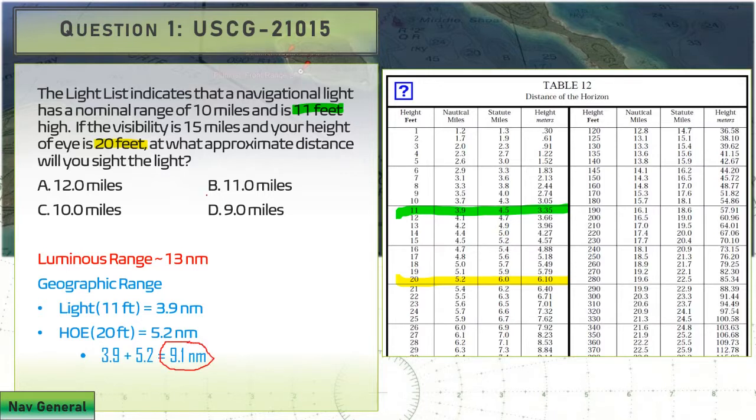We now have both ranges calculated. We figure out which one is smaller. 9.1, and our best answer that's going to approximate that is answer D. Let's take a look at another example.